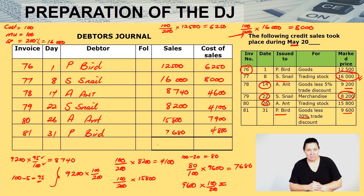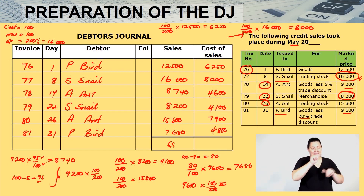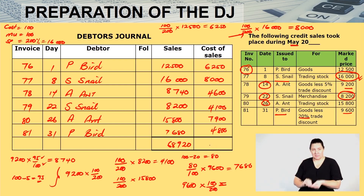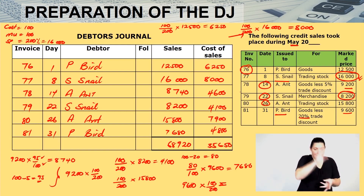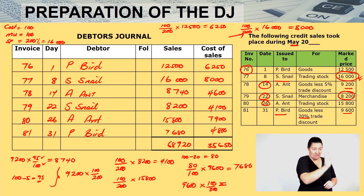Let's quickly total this up. The total comes to 68,920. And for cost of sales, how much do we get? 35,650. After completing the debtor's journal, we are now going to go and post it to the general ledger.